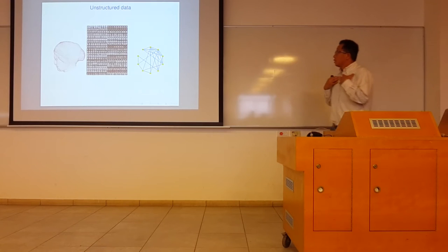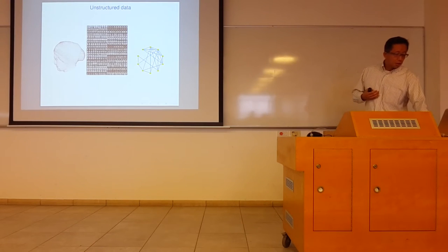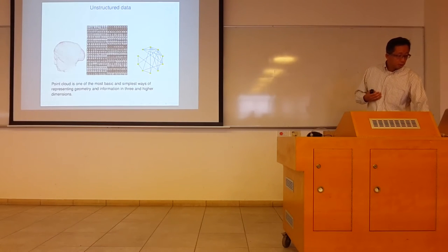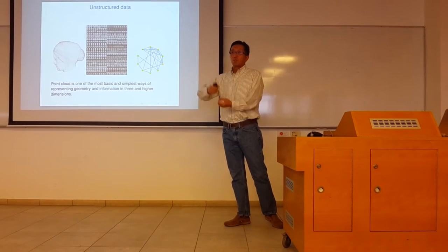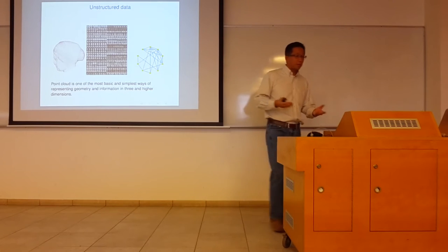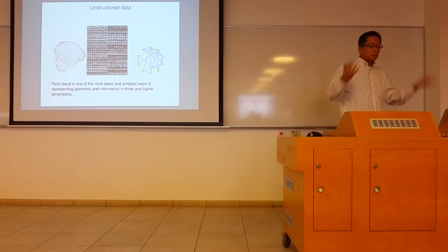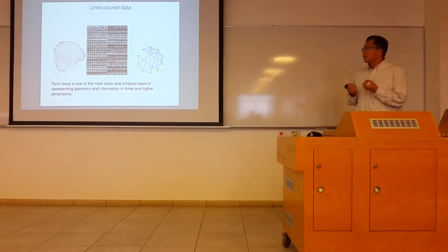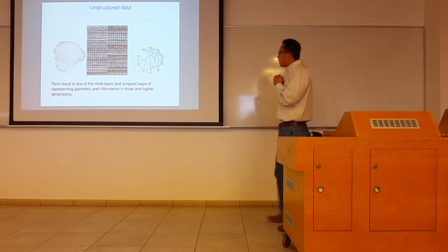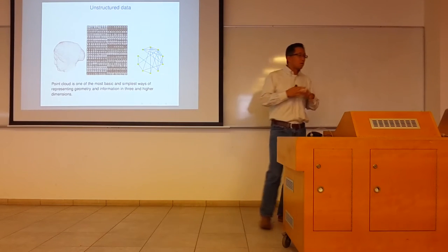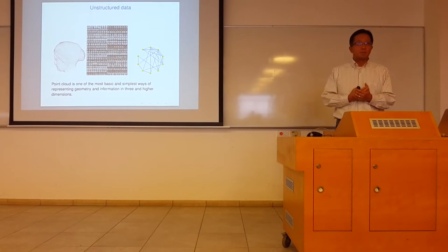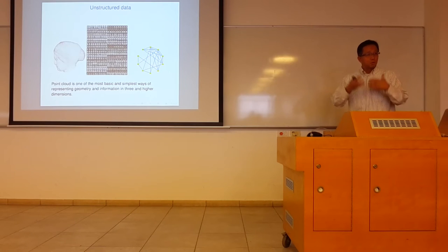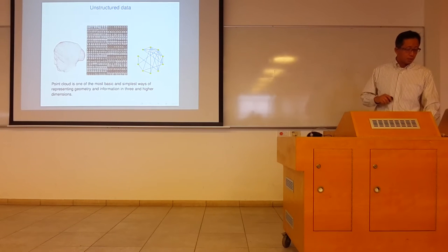Unstructured data is nothing — it's just a bunch of points. Nowadays, machine learning feature vectors are also points in high-dimensional space. It's just a point cloud: there's no connection information, no parametrization. When I talk about parametrization, I mean a really non-linear parametrization where you can reveal the true dimension of the point cloud or the manifold.